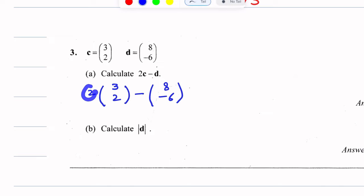This 2 will multiply with both components. It multiplies with 3 and also with 2. So this becomes (6, 4). Six from 3 times 2, and 2 times 2 equals 4. Then (6, 4) minus (8, -6).